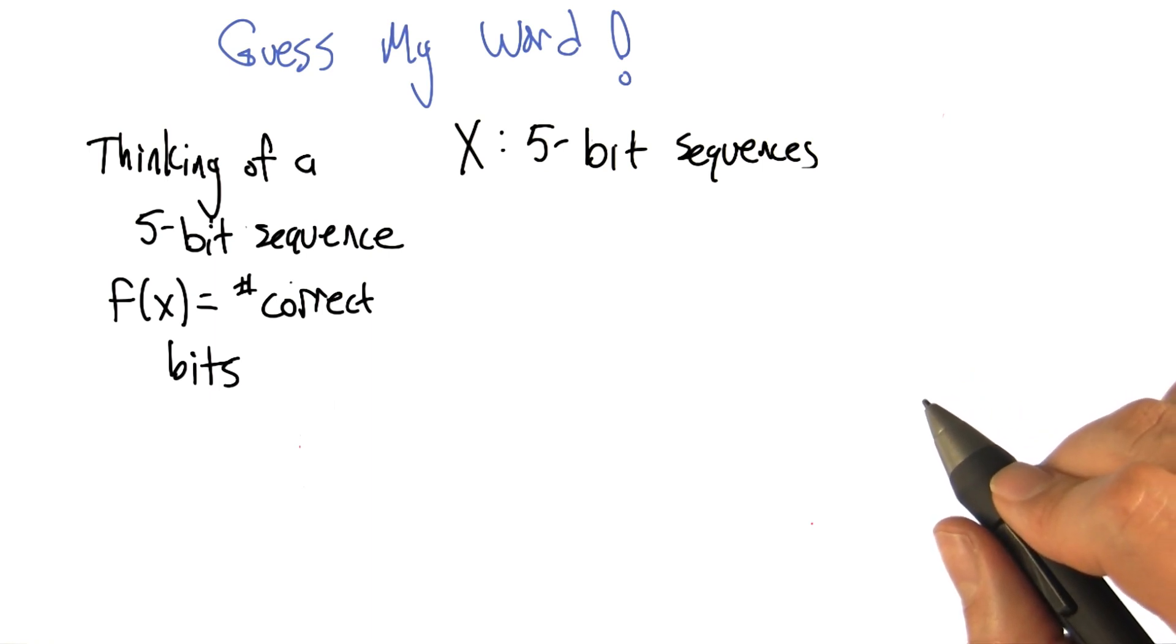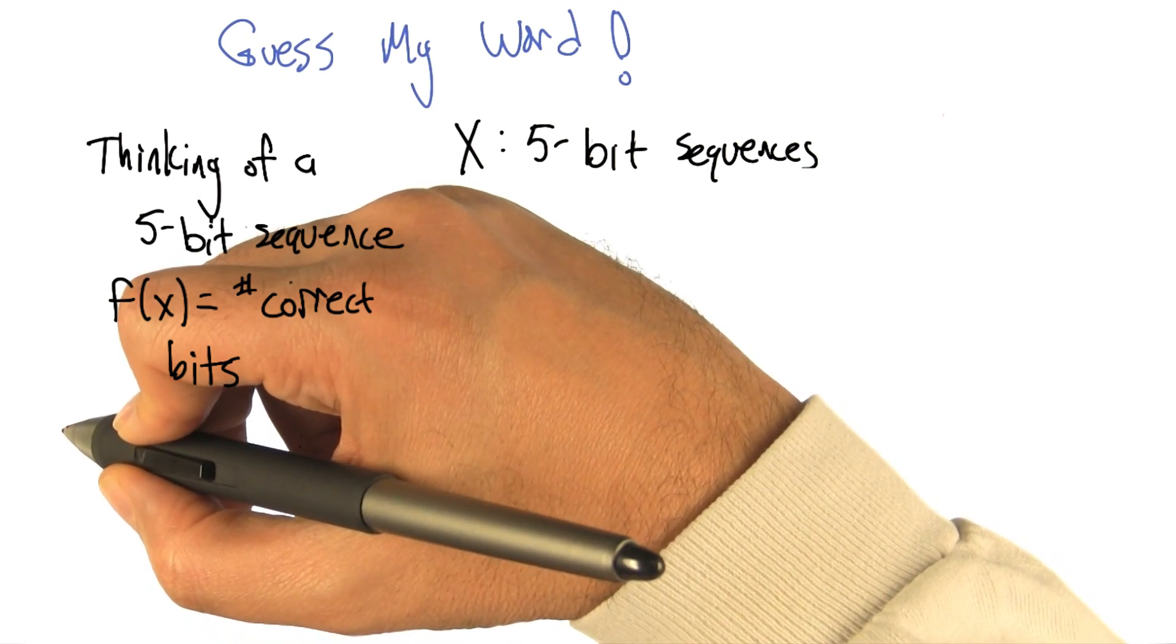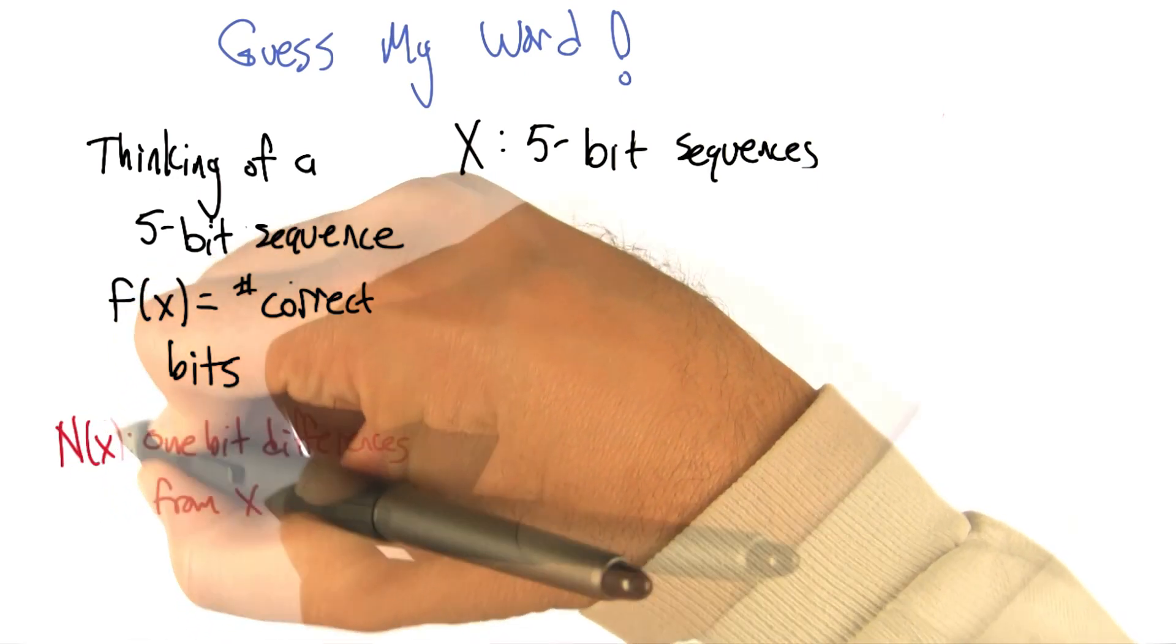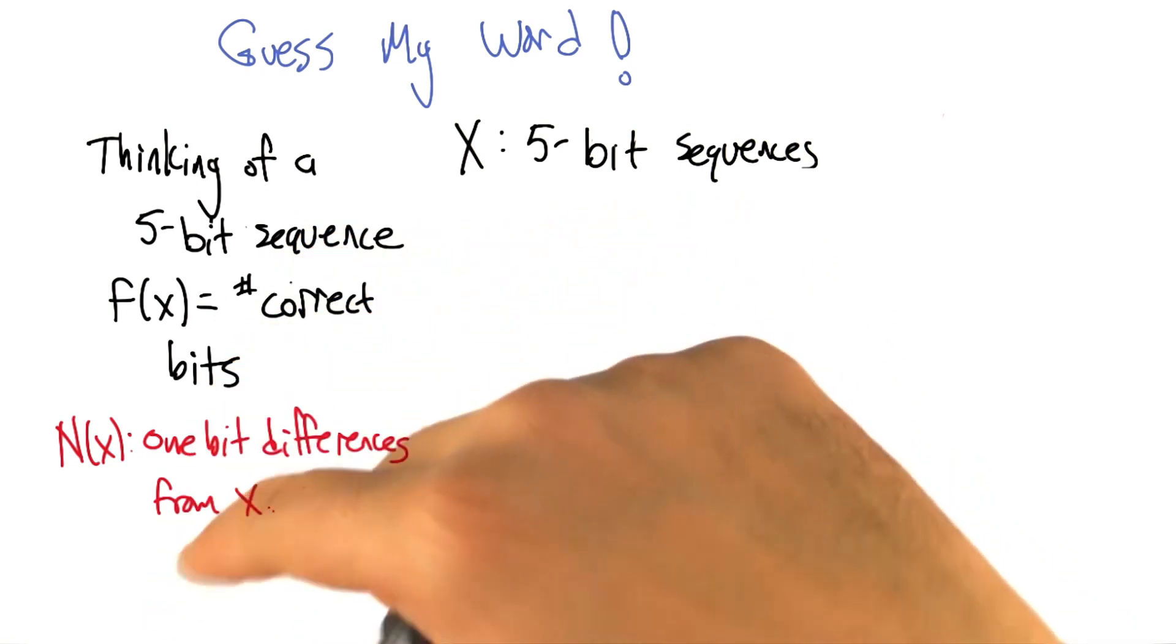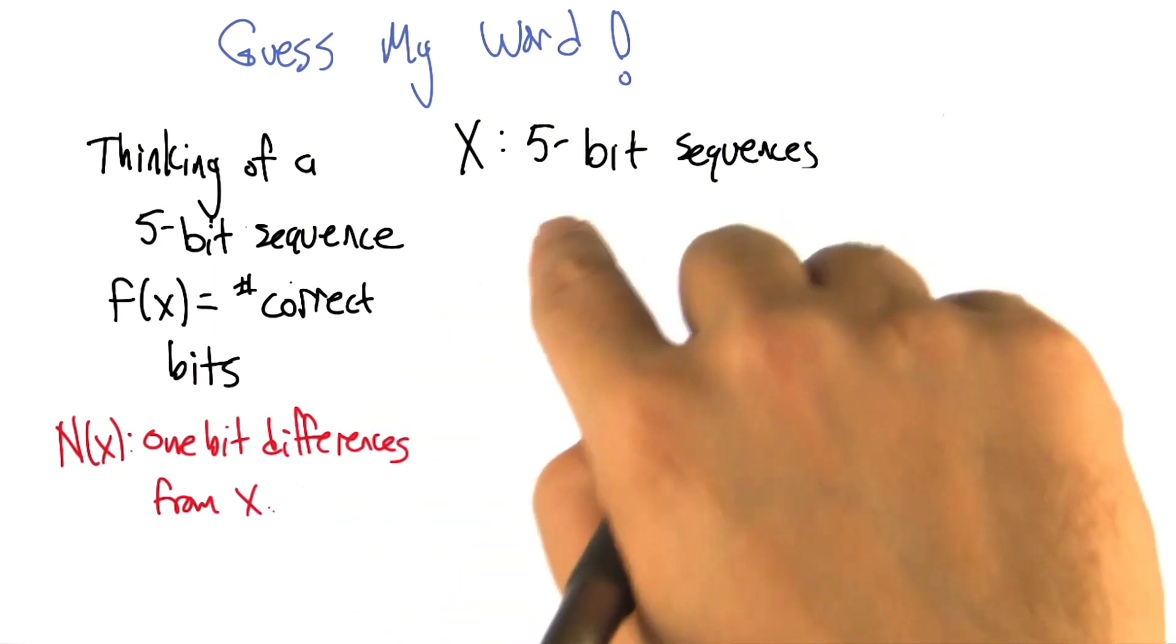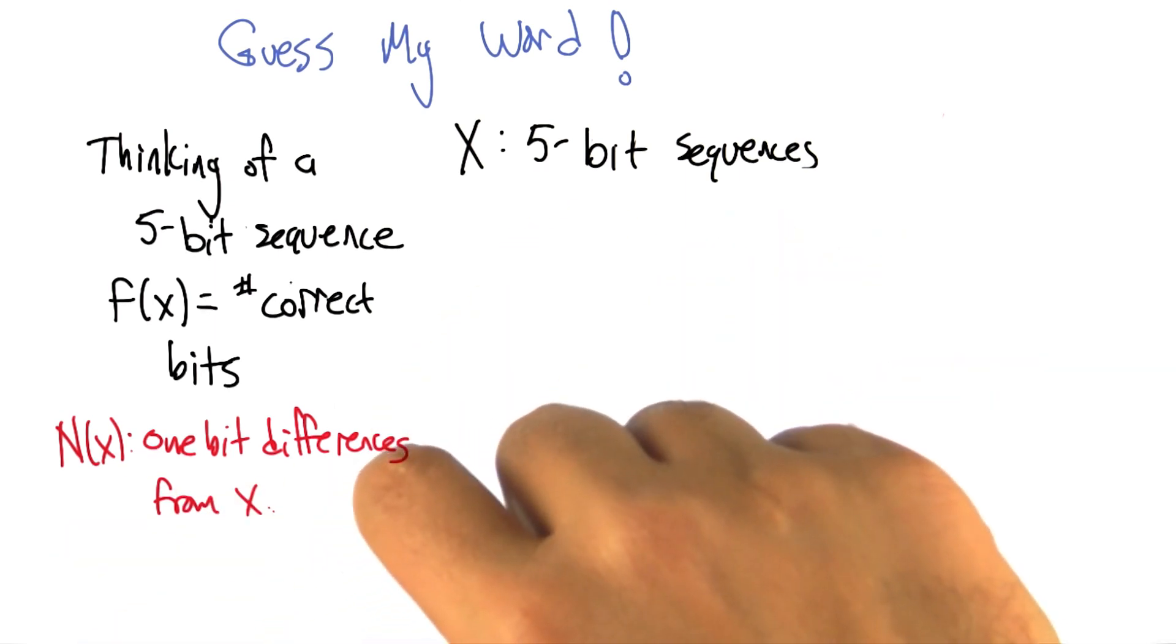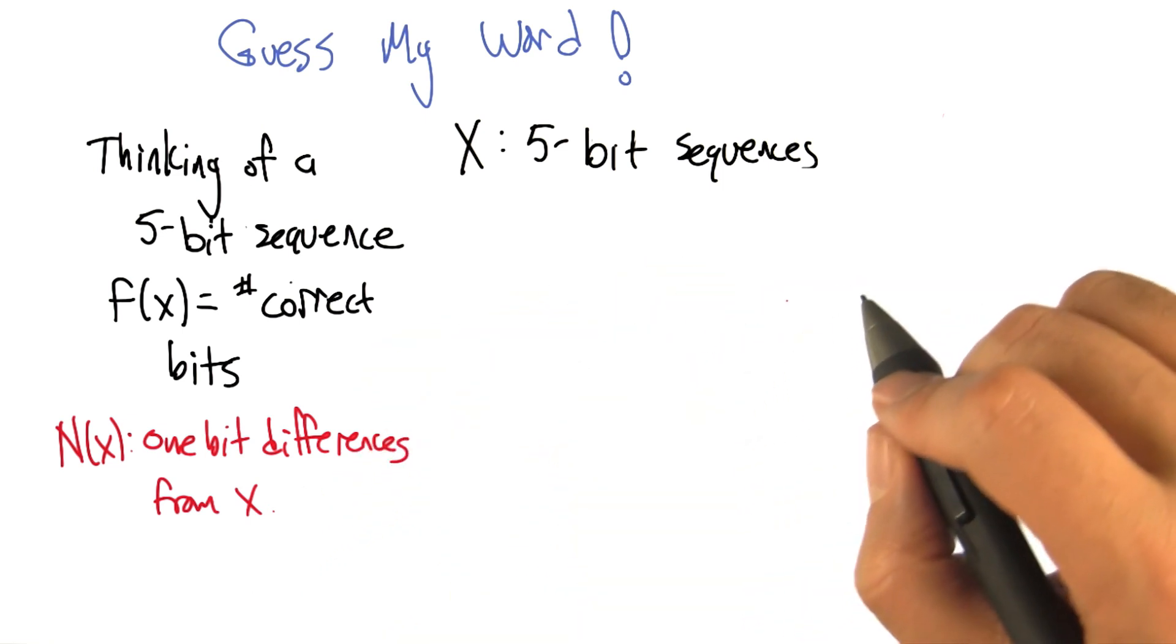We need to define a neighbor function. So I'm going to define a neighbor function so that I can think about this as all one-bit differences from where you are. That's good. And an interesting question is, was it your job to come up with that or was it my job? Is it part of the problem or is it part of the algorithm that's trying to solve the problem? I'm going to say it's a part of the algorithm that's trying to solve the problem. That's how I think of it too.